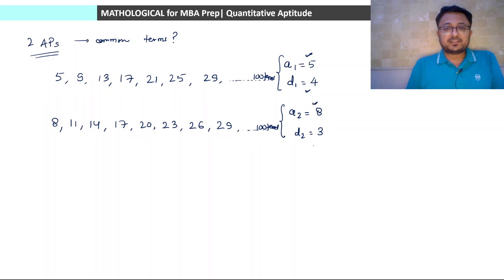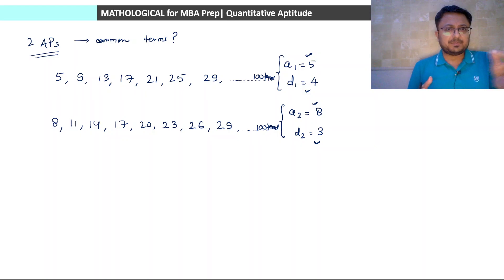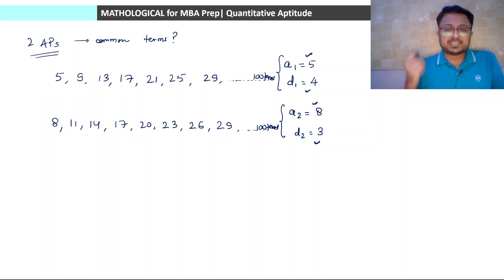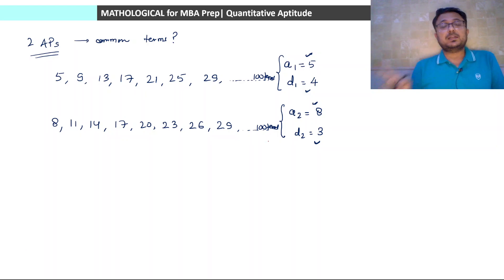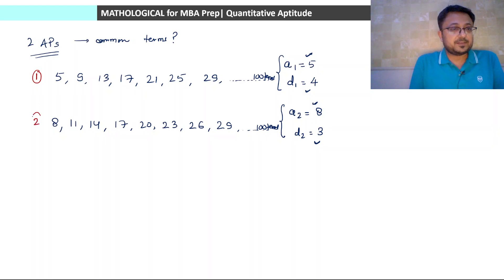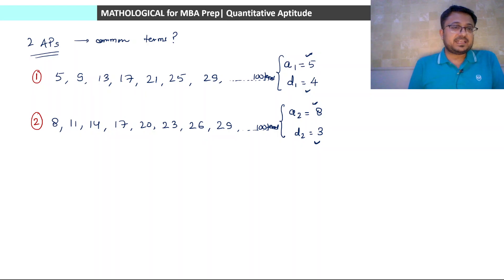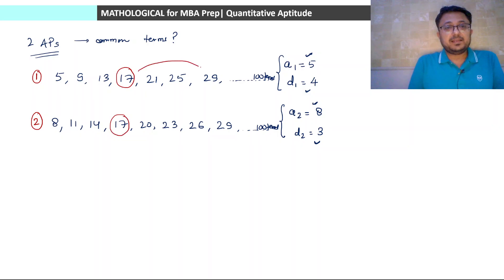Second AP ka first term hai 8 aur common difference hai 3. In any such case, like a question I did in the last session - there it was multiples of twenty - here there is a slight difference. We need to find out common terms in these two series. How many total common terms will be there in series number one and series number two? The first common term is 17. Next common term is 29.